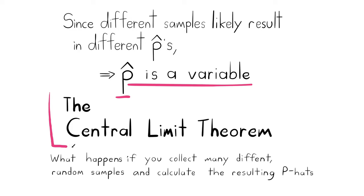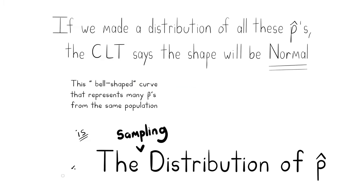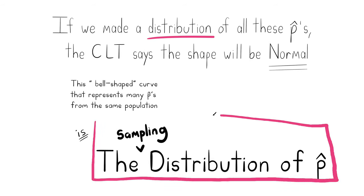There is a very important idea in statistics called the central limit theorem, which gives us important information about what happens if you collected a lot of different random samples and found the sample proportion for each one. It's called the central limit theorem because it is central to the subject of statistics. If we made a distribution of all these P-hats, the central limit theorem says the shape will be normal — Gaussian, bell-shaped. This bell-shaped curve is what this video is all about: the sampling distribution of P-hat.